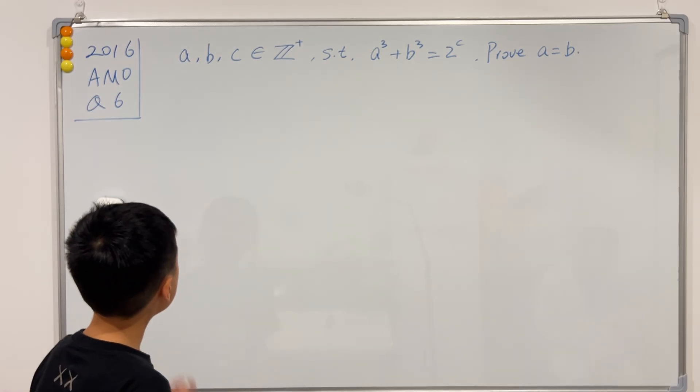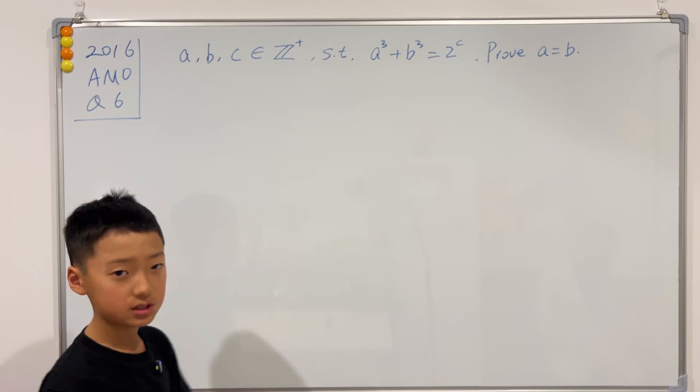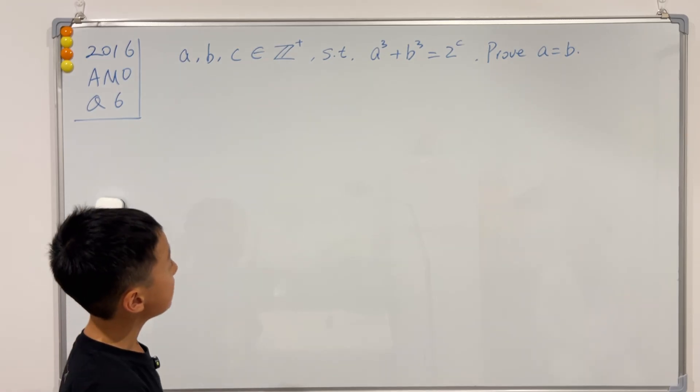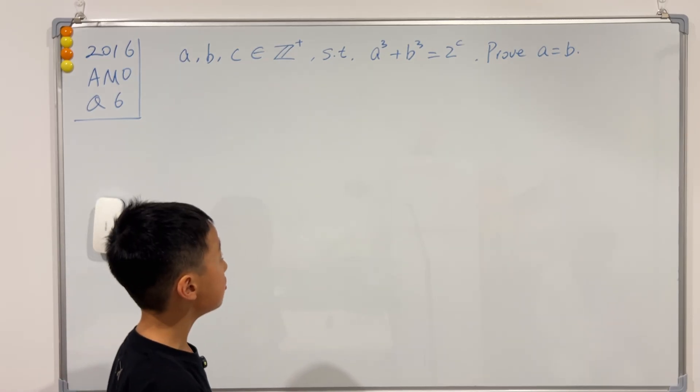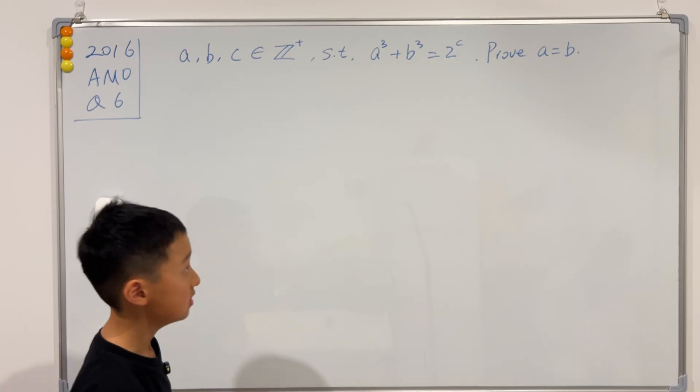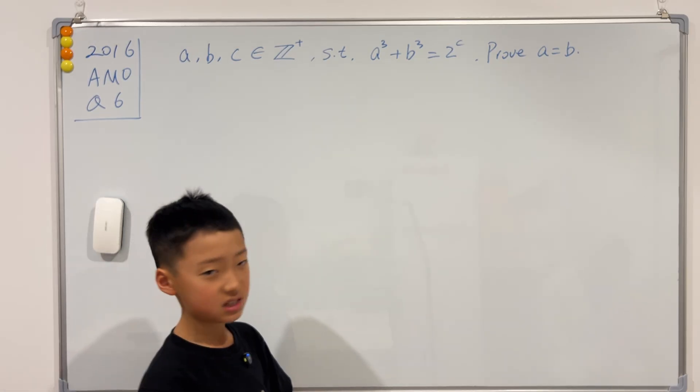This question says that a, b, and c are positive integers, such that a cubed plus b cubed equals 2 to the power of c, and we want to prove that a is equal to b.